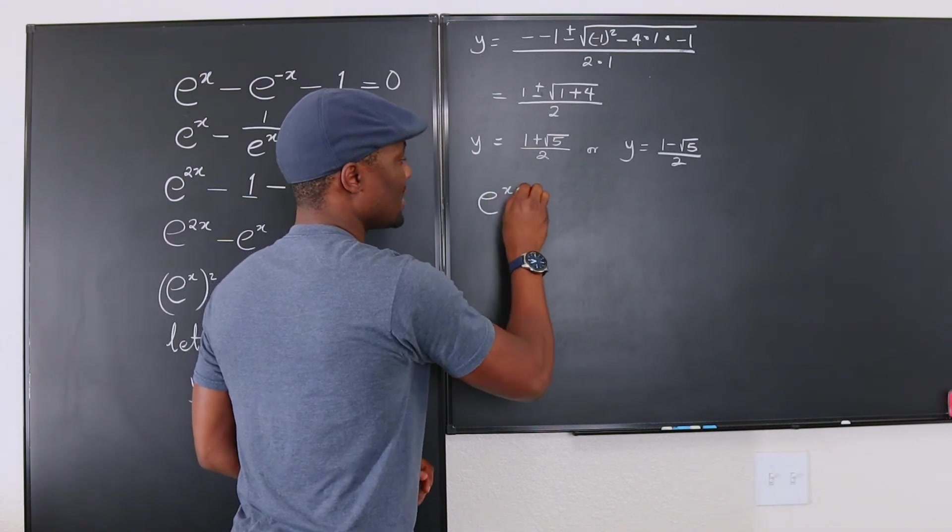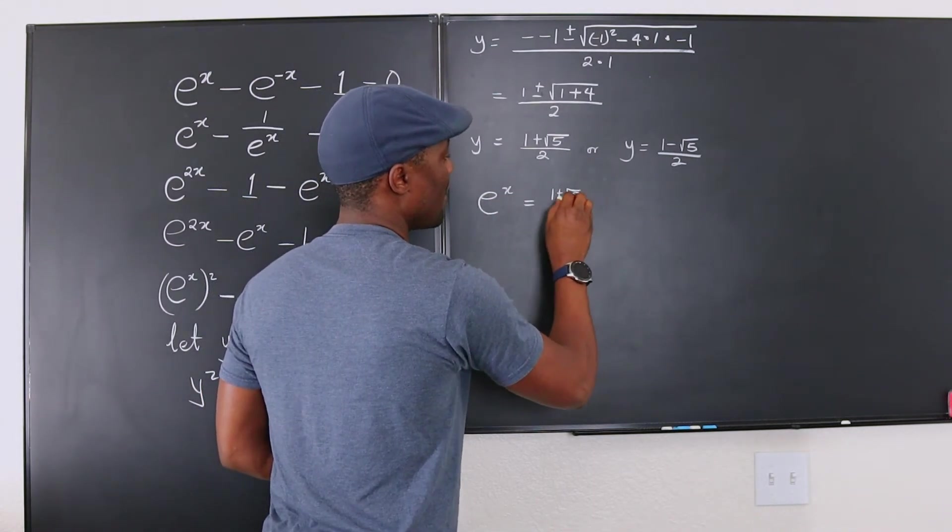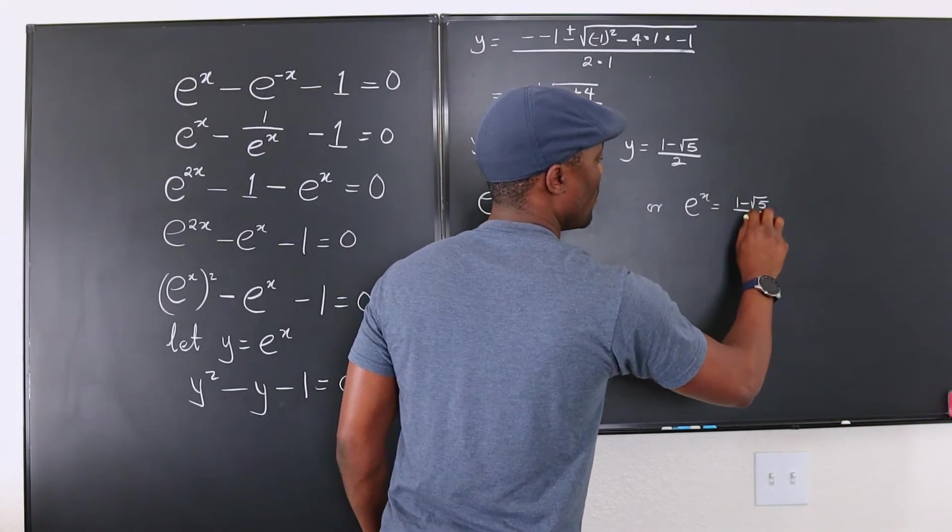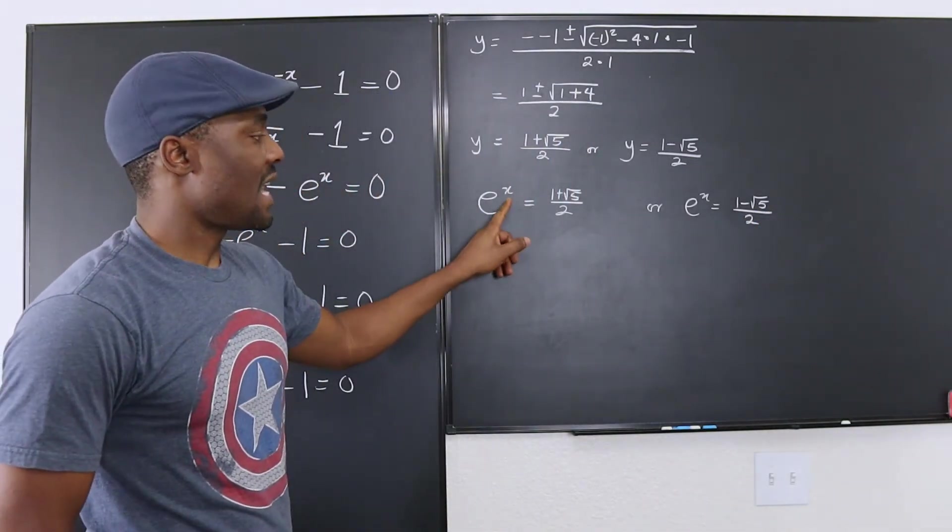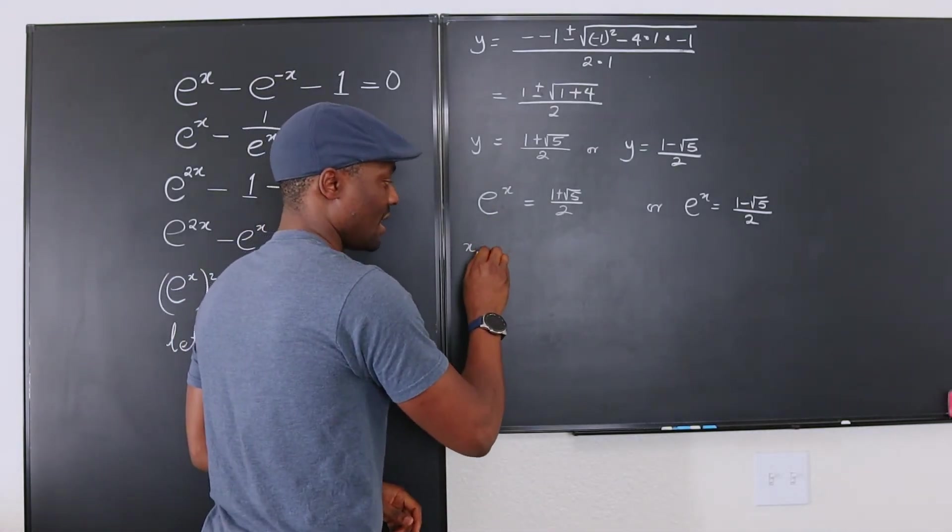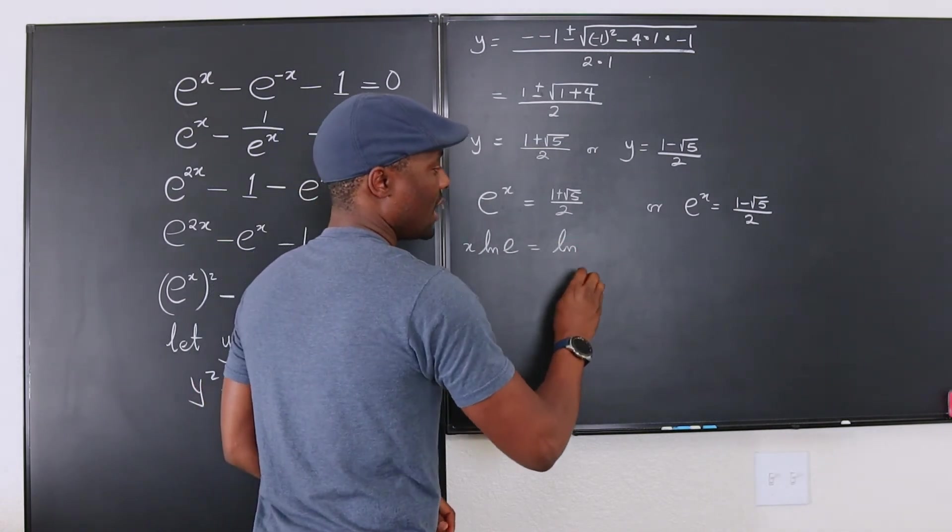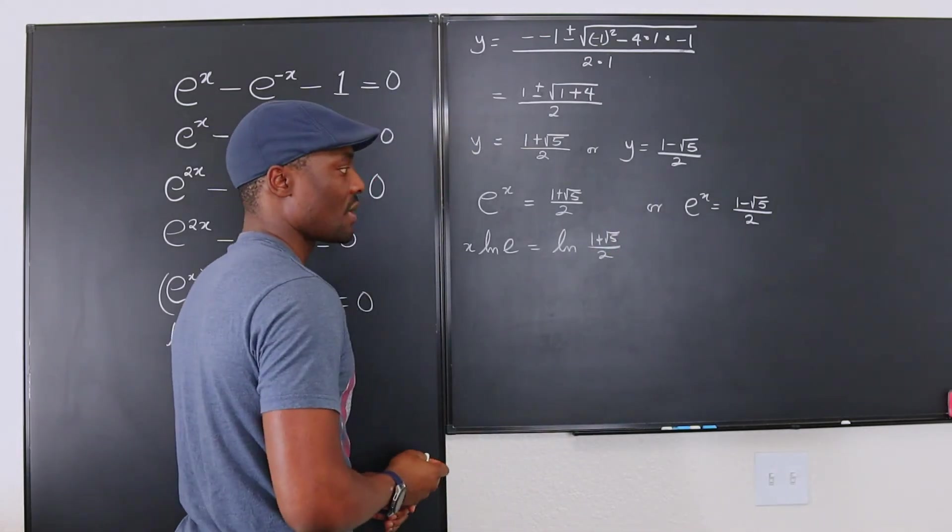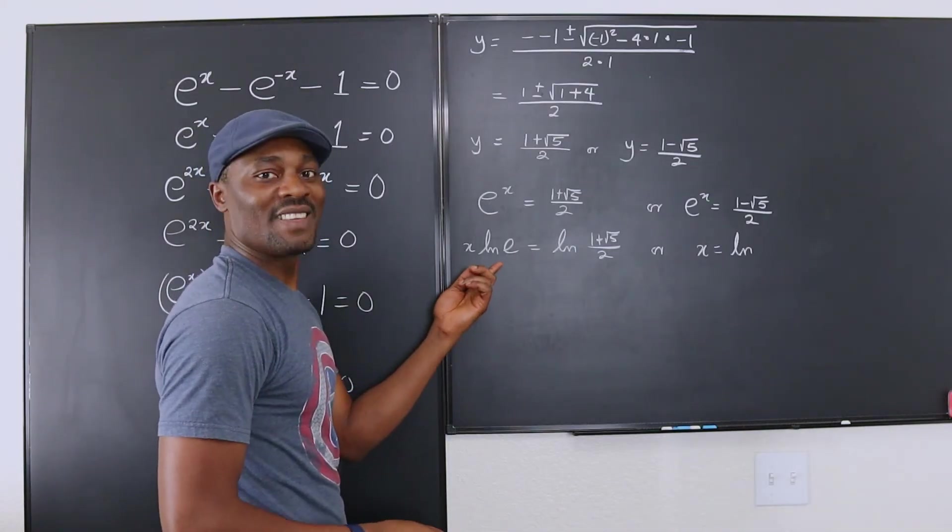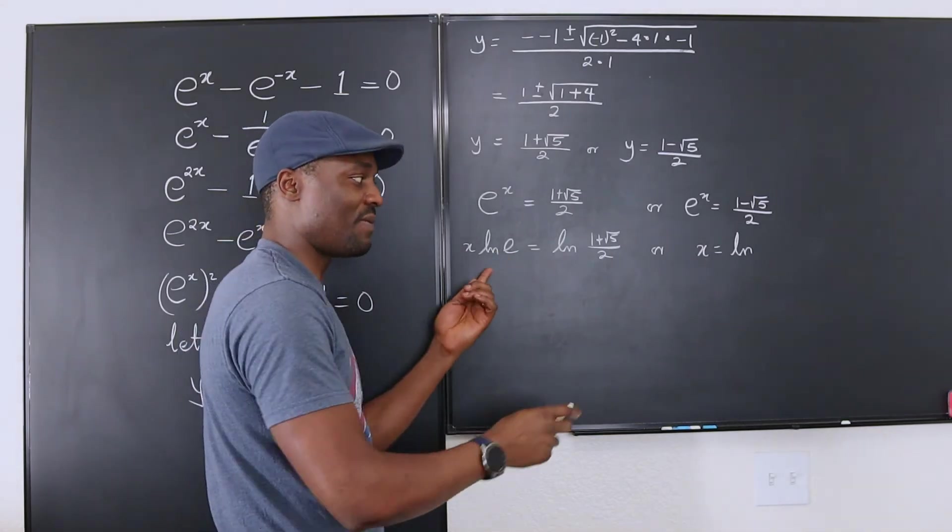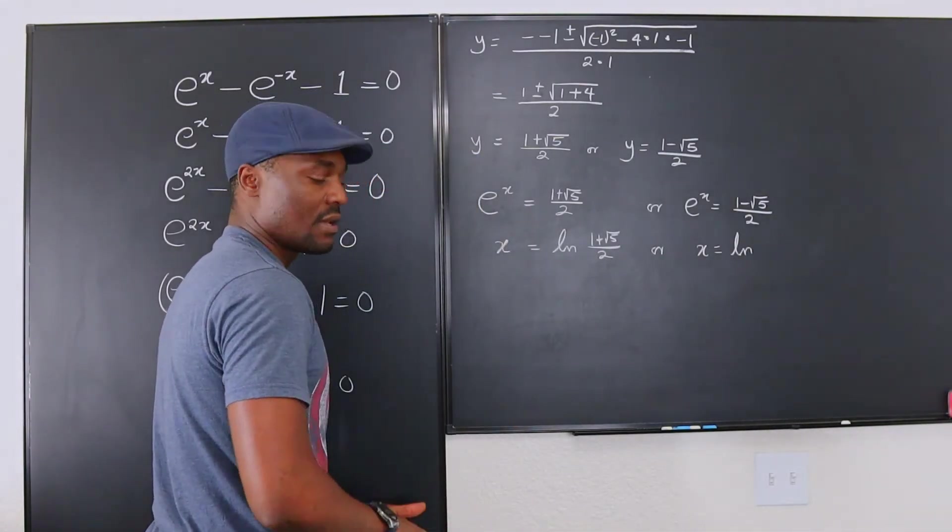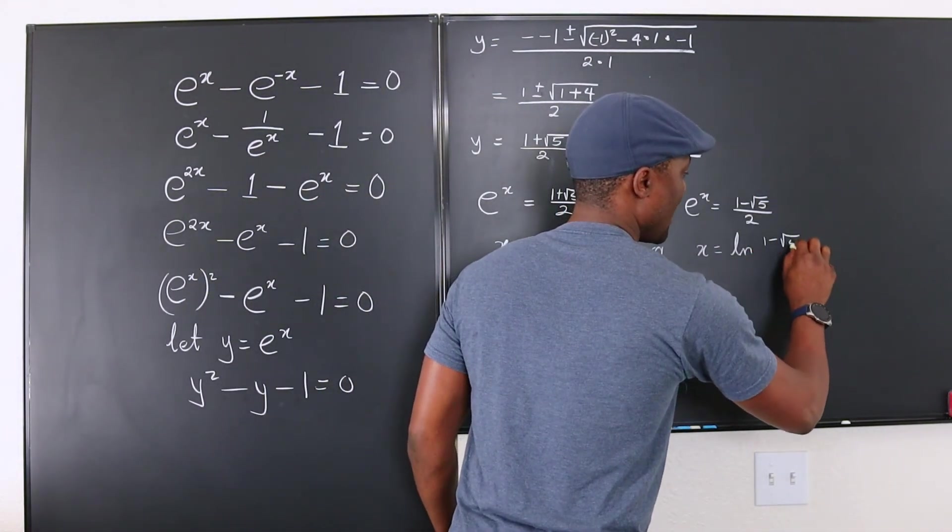e to the x equals 1 plus square root of 5 over 2. Or e to the x equals 1 minus square root of 5 over 2. We need to get x. Remember, in order to get the exponent, if there's no easy way to write it, just introduce natural log. So we're going to write this. This is going to be x natural log e equals natural log 1 plus square root of 5 over 2. Or x equals natural log. You know, I didn't have to write this because natural log of e will always be 1. And x times 1 is 1. So if I didn't repeat it, just understand. I already solved this. I'm just going to get rid of this. That's x. Just take the natural log of both sides. So this is going to be 1 minus the square root of 5 over 2.